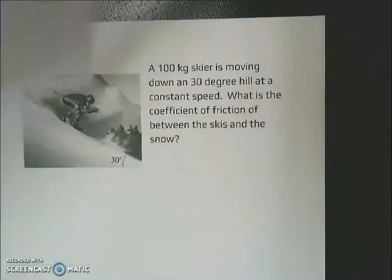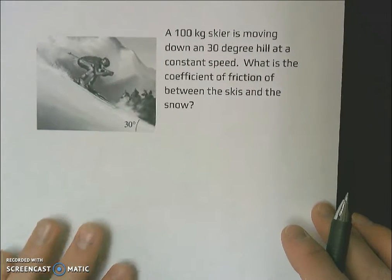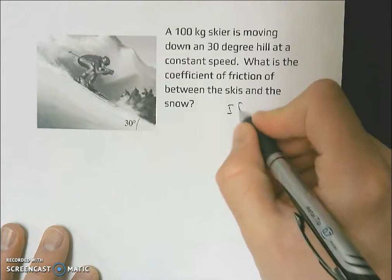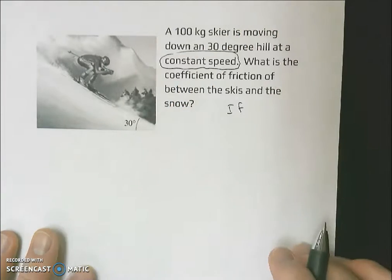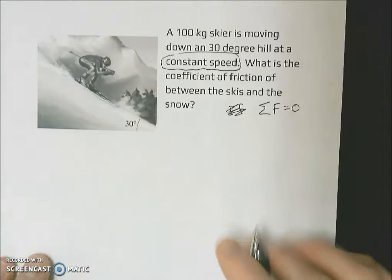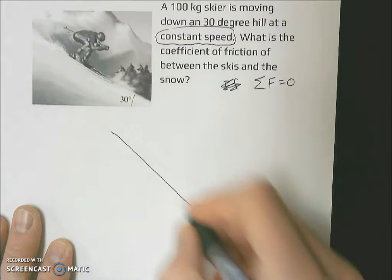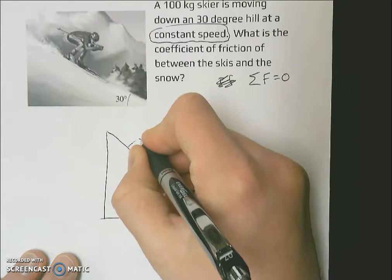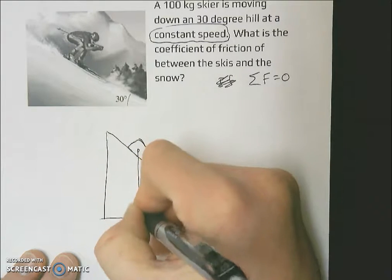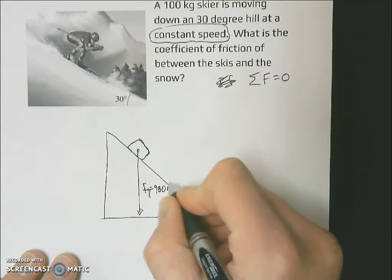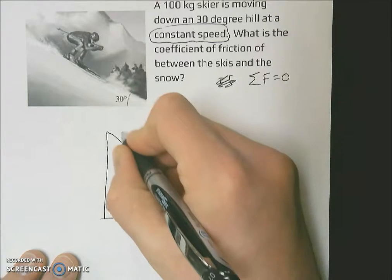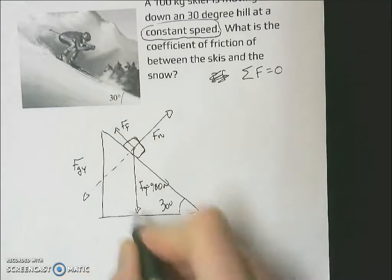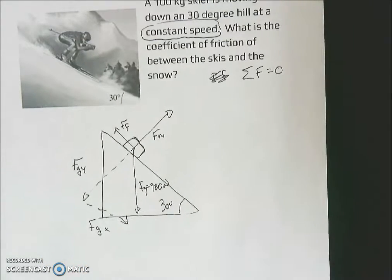The last type of problem I want to work through with you guys is one where we might be on an incline plane. We have a skier, 100 kilograms, going down a 30 degree hill. What is the coefficient of friction between the skis and the snow? Constant speed. If it's a constant speed, that means we know all the forces are going to add up to zero. When we do this, I almost always start by drawing a force diagram. 30 degree angle for the hill. Here's my skier. I'm going to represent him as a box like all other force diagrams that I do. Force of gravity down, that's going to be 980 newtons. We have a force normal. We have a force of friction. Anytime we have a force at an angle, that means we can break it up into our force of gravity in the y and force of gravity in the x.